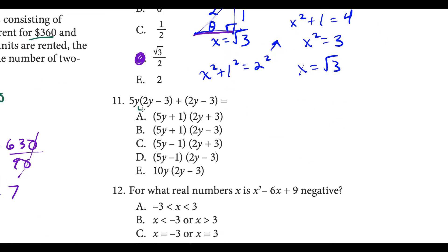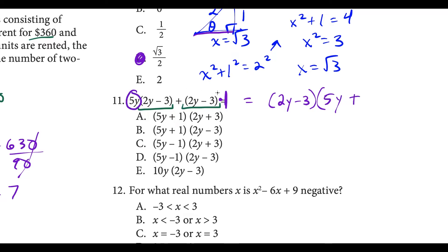For question eleven, we have to factor. Notice these expressions match — we have a (2y minus 3) and a (2y minus 3). What usually throws students off is that there's an invisible times 1 attached at the end. When we factor, we take out (2y minus 3) — what they have in common. On the first term, there's a 5y left, and on the second term, there's a 1 left. So we have (5y plus 1)(2y minus 3), which is choice B.